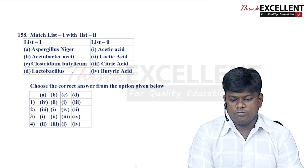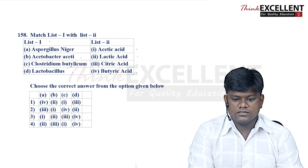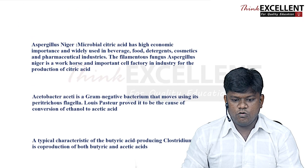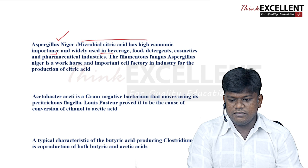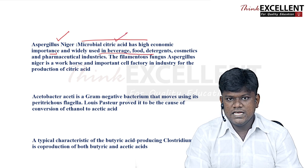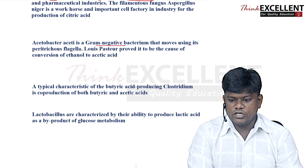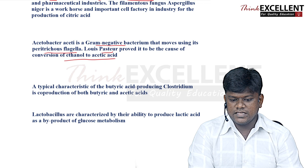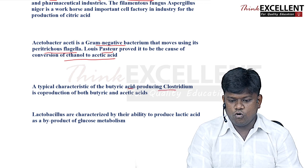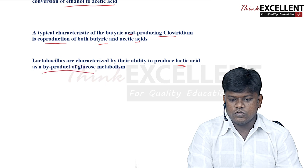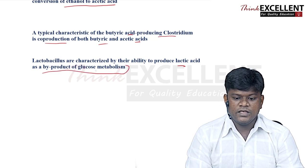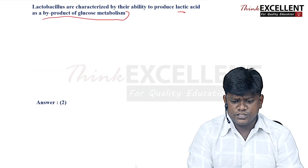Question 158: match Aspergillus niger, Acetobacter aceti, Clostridium butylicum, and Lactobacillus with the acids they produce. Aspergillus niger produces citric acid (high economic importance). Acetobacter aceti is a gram-negative bacterium that converts ethanol into acetic acid. Clostridium co-produces butyric and acetic acids. Lactobacillus produces lactic acid as a byproduct of glucose metabolism, converting milk into curd.